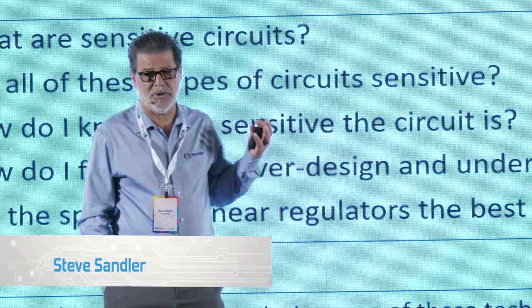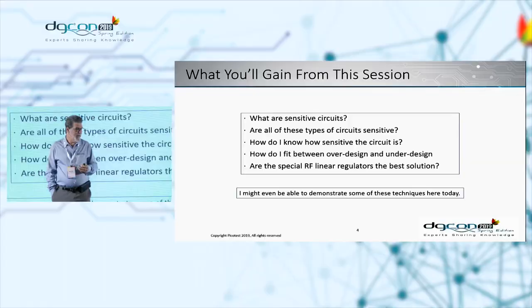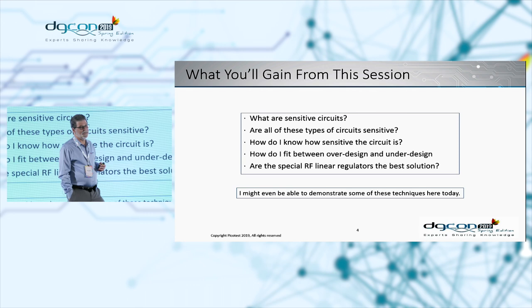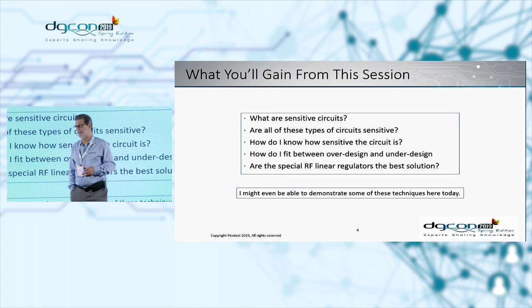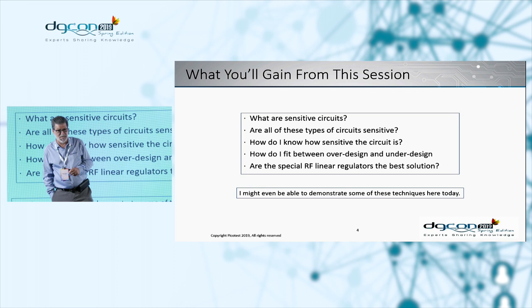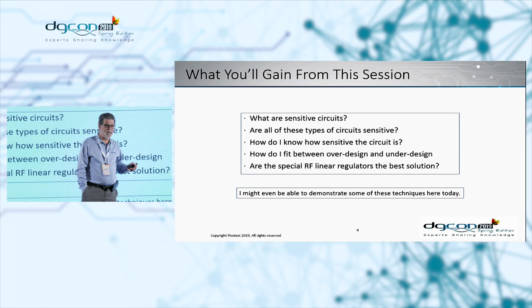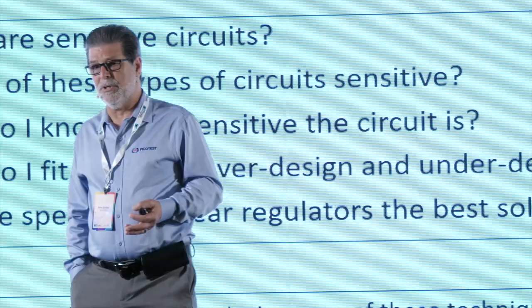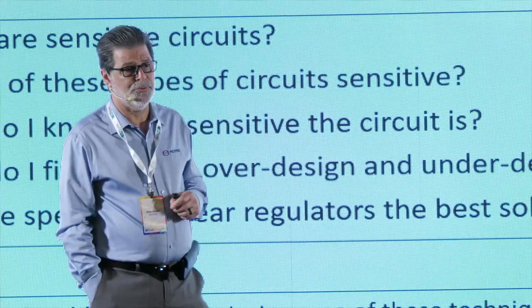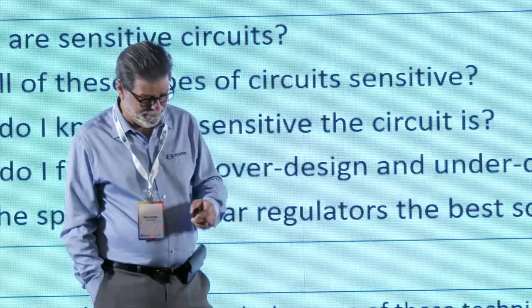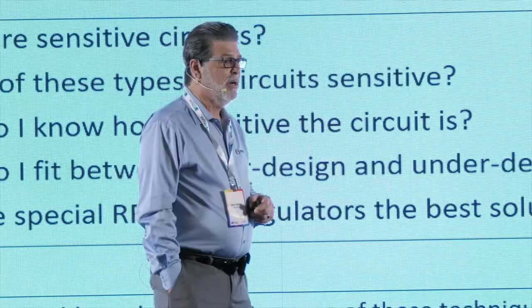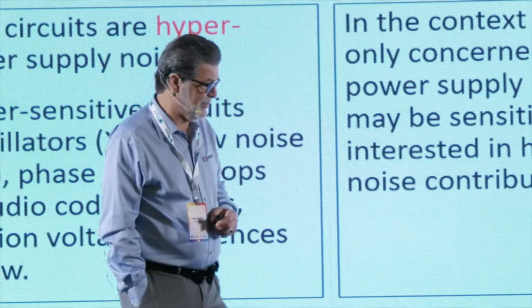I talk about power integrity for sensitive circuits. What exactly is that? What's a sensitive circuit? How do we even know if a circuit is sensitive? That's really a subjective and relative term. In general terms, things that are particularly sensitive include LNAs, things that have reference clocks, the reference clocks themselves, and most things that have phase lock loops. How do we design around a sensitive circuit without under-designing or over-designing? If we over-design, we spend too much money and take up too much real estate. If we under-design, we don't get the performance we're supposed to get. So the question is how we navigate the design of power rails for sensitive circuits.